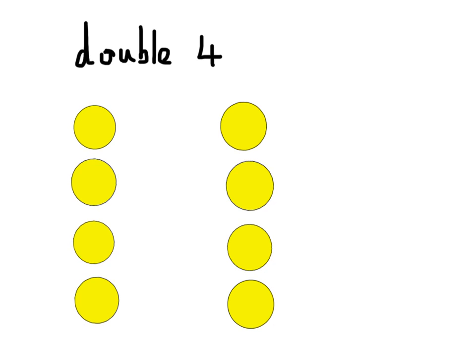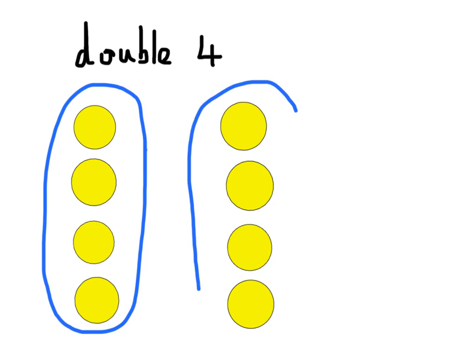Let's take a simple example. Let's look at a number like double 4. So we've got the number 4 which we can represent with counters like this. And if we double it, it means having the same amount again. So that's another 4. So 4 and 4 equals 8. Really easy to do.